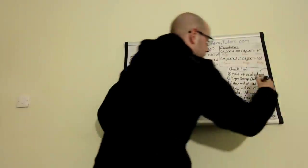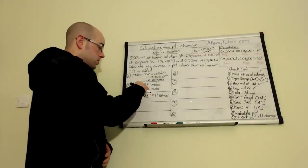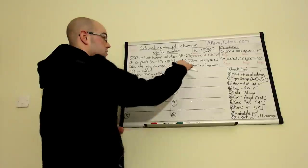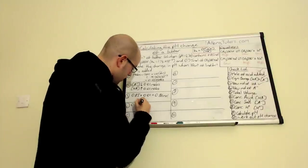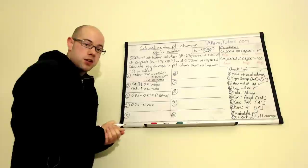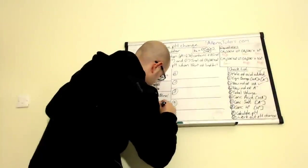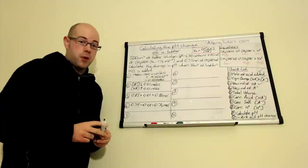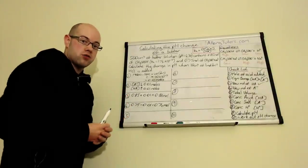Step four is working out the new number of moles of salt. We've used up 0.01 moles of salt when adding the strong acid. The original moles of salt was 0.75, so we subtract 0.01 to get a new number of moles of salt: 0.74 moles. Now we know the moles of acid and salt after adding the strong acid to the buffer.